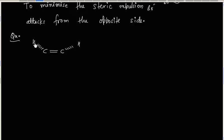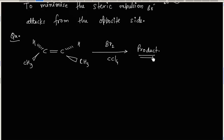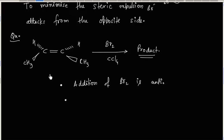Now this is cis-2-butene reacting with bromine in CCl4 solvent. What will be the product? To answer this question you must know two things: first, addition of bromine is anti; and second, if you add two groups from the anti side in case of cis-2-butene, you will have the final product as a racemic mixture.